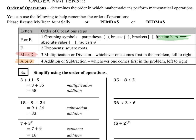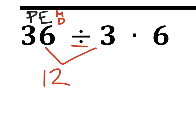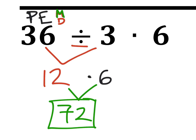Remember, it's four steps, not six — we have six operations but only four steps. For the first problem: no parentheses, no exponents, so I look for multiplication or division. Moving left to right, I have division first: 36 divided by 3 is 12. Then multiplication: 12 times 6 is 72, which is our final answer.